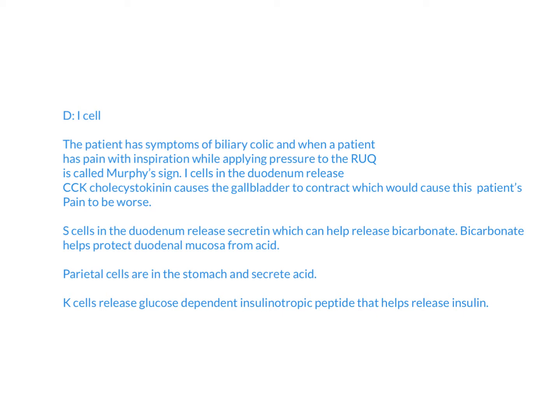For the rest of the answer choices, we have the S-cells in the duodenum, which release secretin, and that helps release bicarbonate. Bicarbonate usually protects the duodenal mucosa from acid, which is important since acid from the stomach could damage that sensitive mucosa.